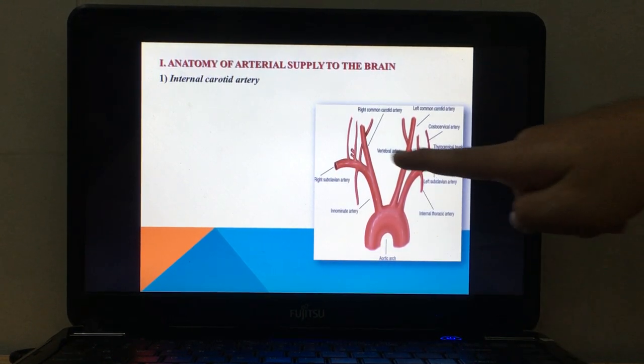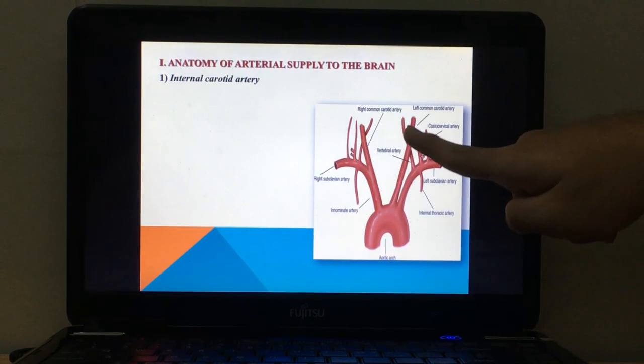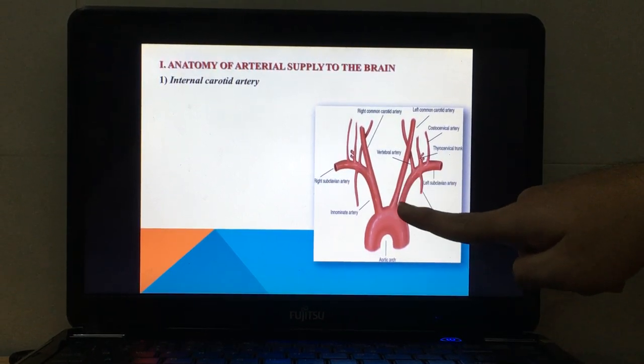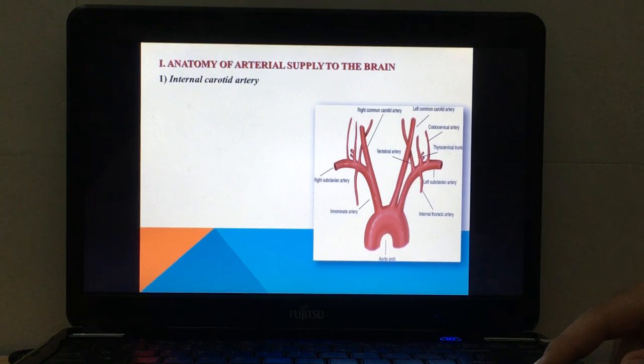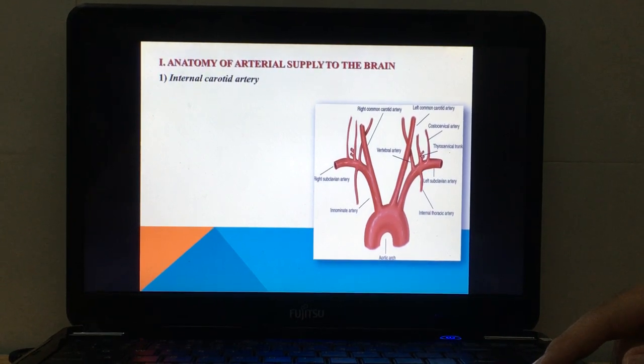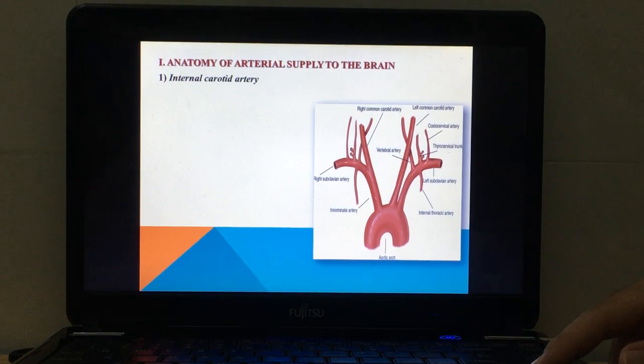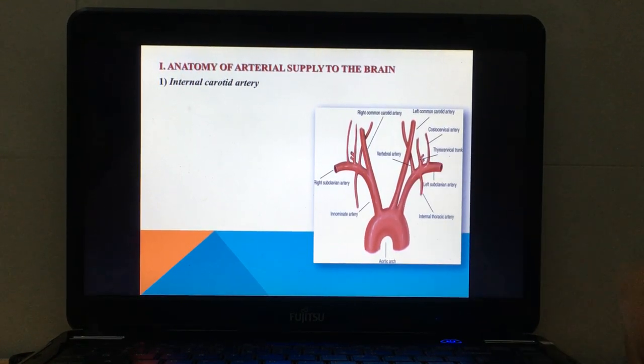This is the common carotid artery and this is the subclavian artery. There are differences between the left and right sides. On the left side, they derive directly from the aortic arch, but on the right side...